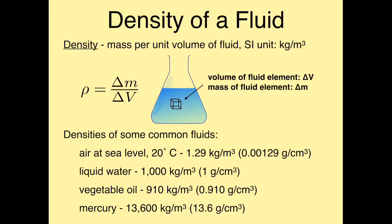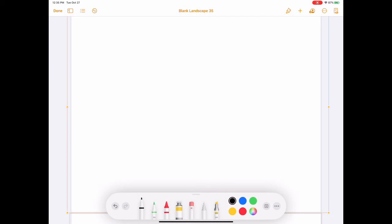A very dense fluid example is mercury, which has a density of 13,600 kg/m³, or 13.6 g/cm³. Let me show you how to do the unit conversion for density from kilograms per cubic meter to grams per cubic centimeter, just so we're all on the same page.